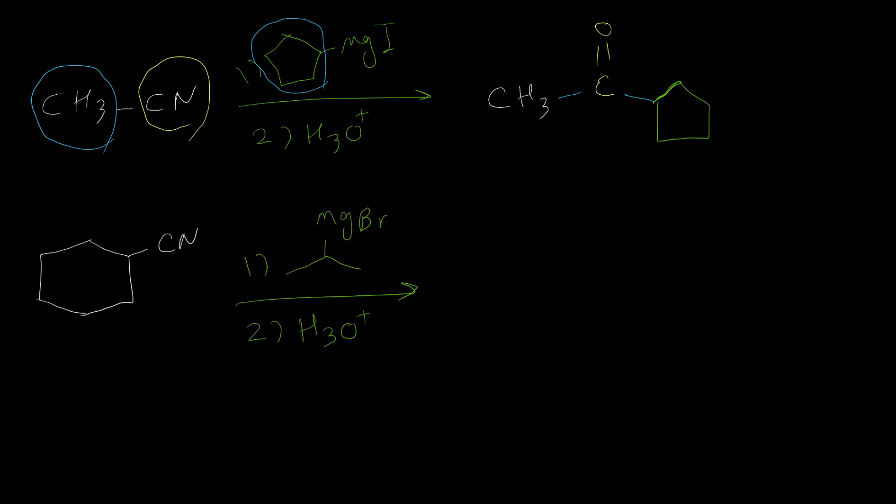Here is the second example. So we are going to have the group from nitrile on one side. Then we have carbonyl group instead of nitrile group. And on the right side, I am going to put alkyl group from Grignard reagent.